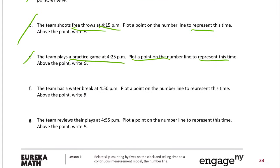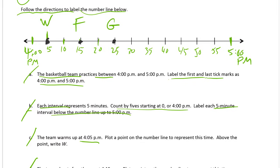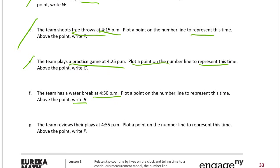And now F. The team has a water break at 4:50. And since we already used W we're going to have to call it B for break. And we're going to plot a point on the number line to represent this time. So 4:50 is going to be B for break. Find the 50. And B for break. Done with F.